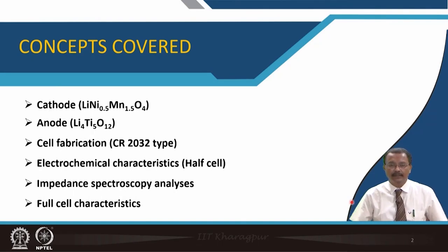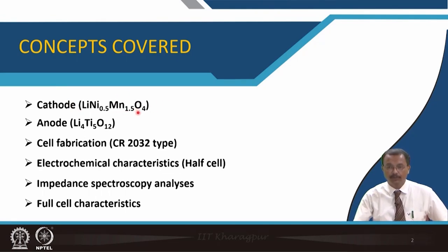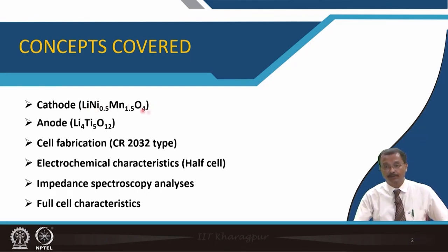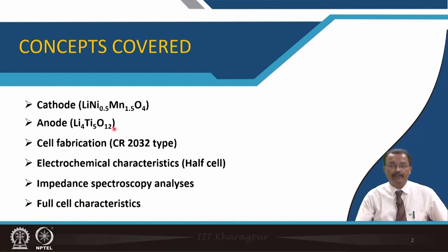Now, it is important to show you that if you construct a lithium-ion cell in the laboratory, what characteristics you will be getting and how relevant they are to what you have learnt. Any battery has a positive electrode — which I should not define as cathode, but as positive electrode. Here I have selected a spinel-type material, which is a high voltage 5-volt positive electrode. For the anode, this is also a spinel electrode: lithium titanium oxide, abbreviated as LTO.